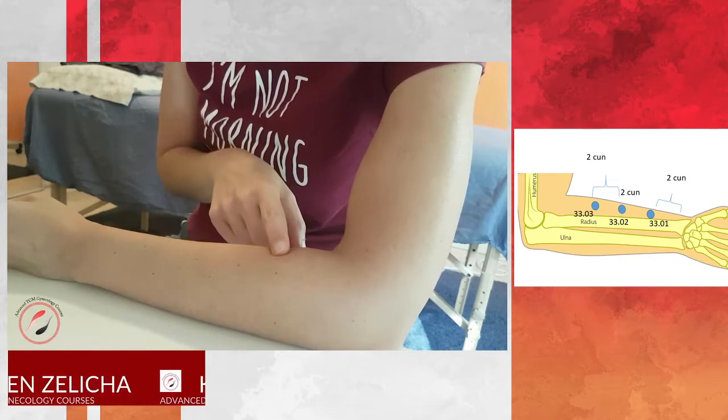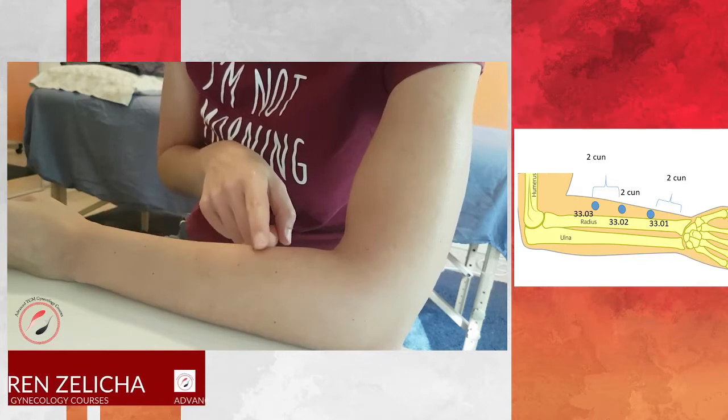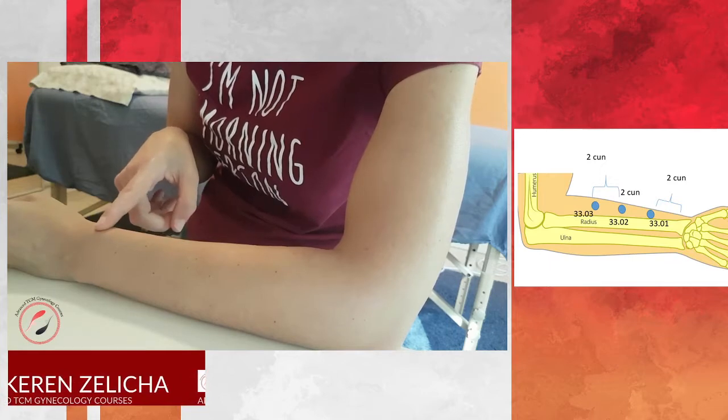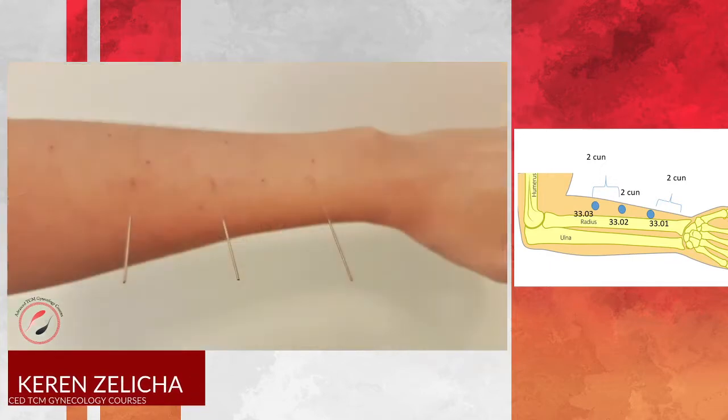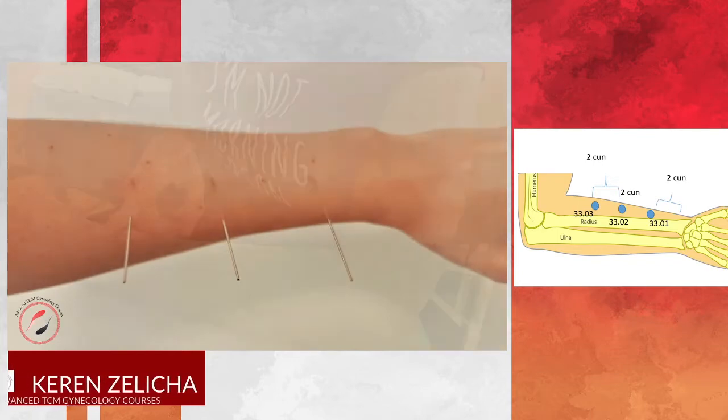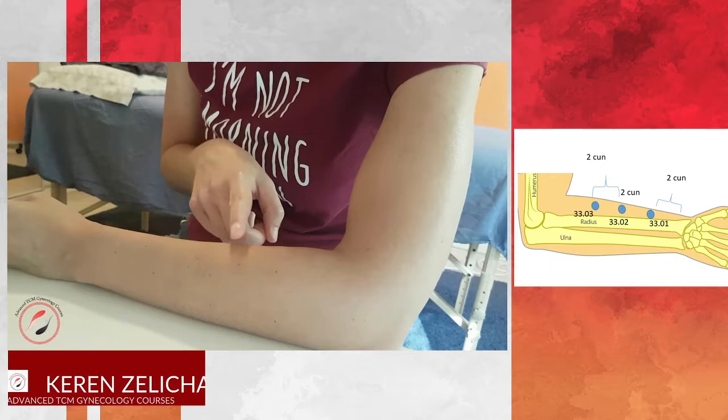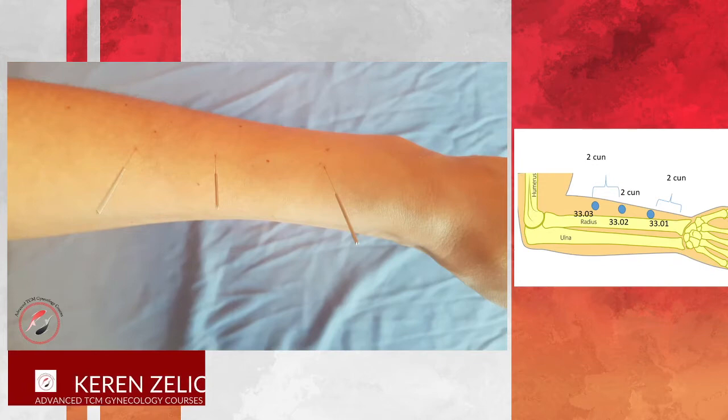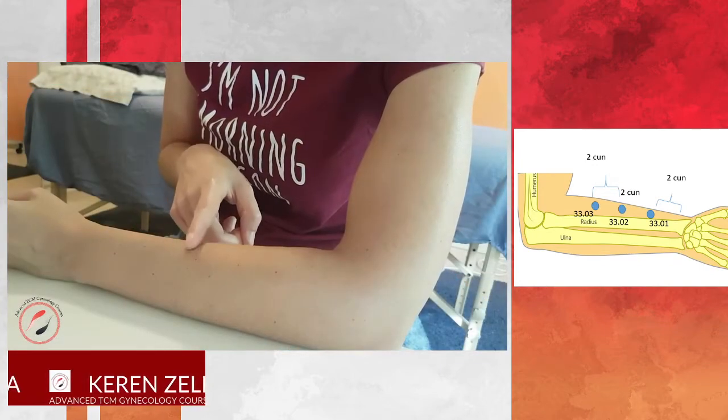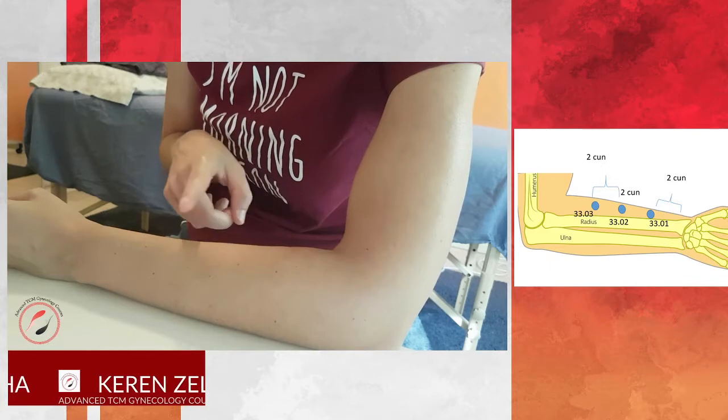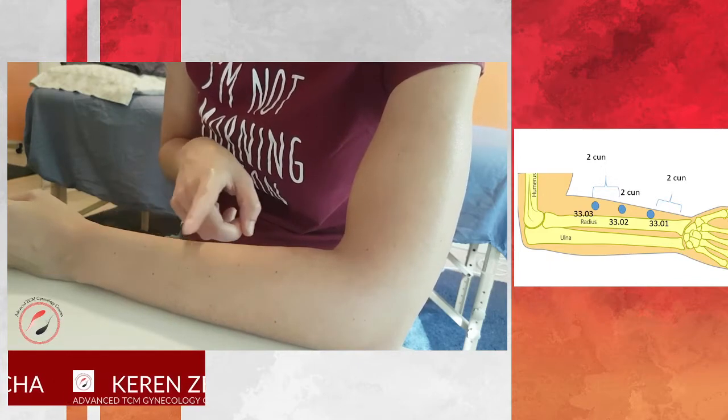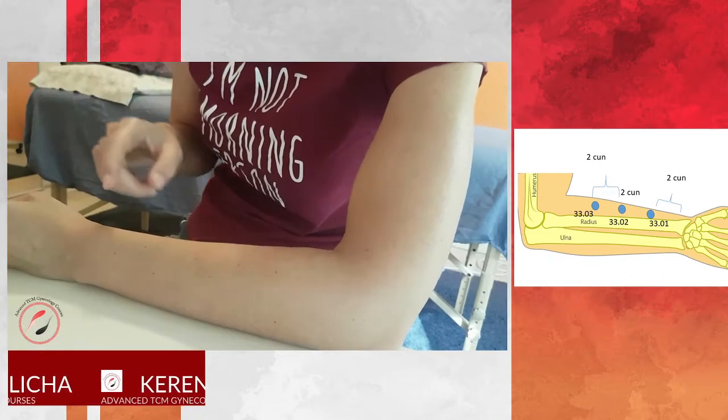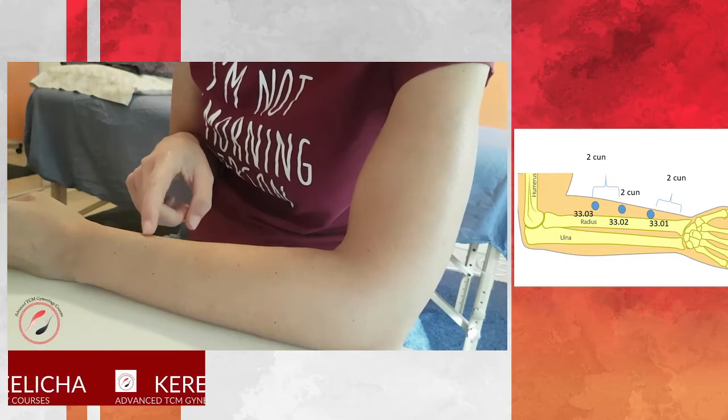Since it's on the large intestine meridian, according to the zhangfu biao li theory, it influences the liver meridian. Large intestine yangming influences liver jue yin meridian. Therefore, the liver reaches the genitals and influences menstrual issues, so these points can influence the lower jiao.